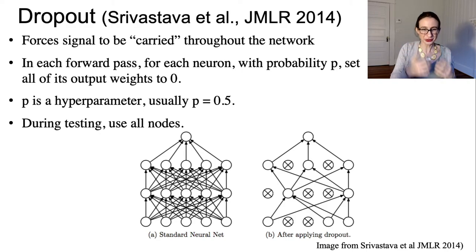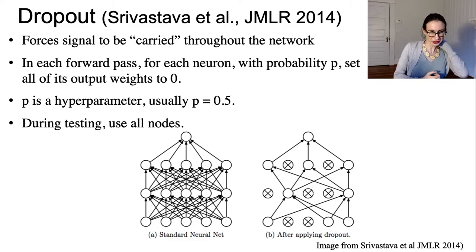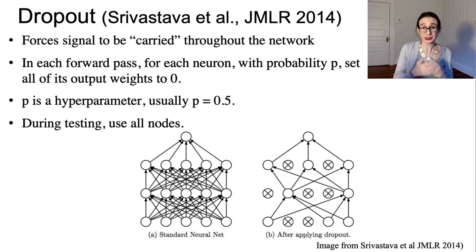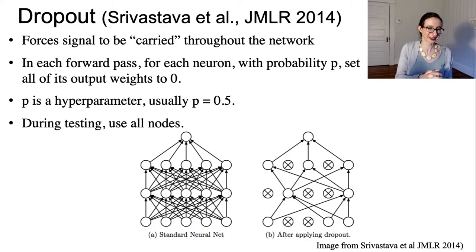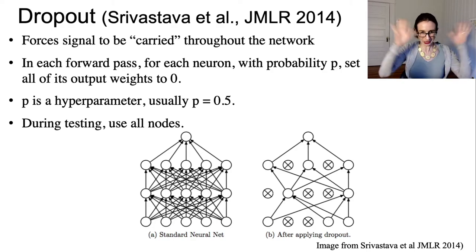Dropout is systematically ignoring neurons throughout the process of training. When it does this, it forces the network to rely on the other neurons. Usually the value of p is 0.5, so half the time each neuron is ignored — selectively ignoring neurons so that the others are forced to compensate. The image shown here illustrates that a bunch of these neurons with probability 0.5 are out in a given round.